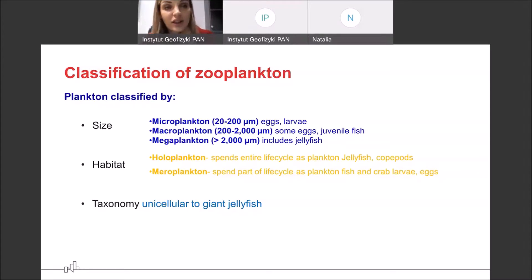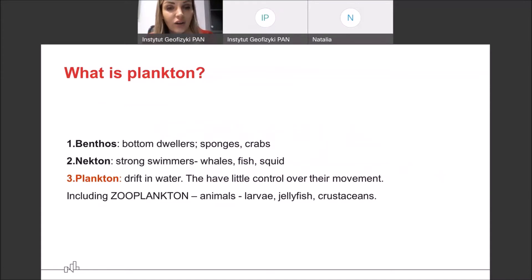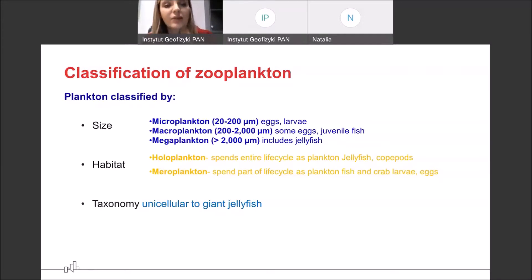So both phytoplankton and zooplankton can be divided based on their size. So let's focus on zooplankton now, which are animals, of course, like larvae, jellyfish or crustaceans. There is quite a broad range of different size categories, starting with microplankton, which are mostly eggs or larvae, up to megaplankton, which includes jellyfish.